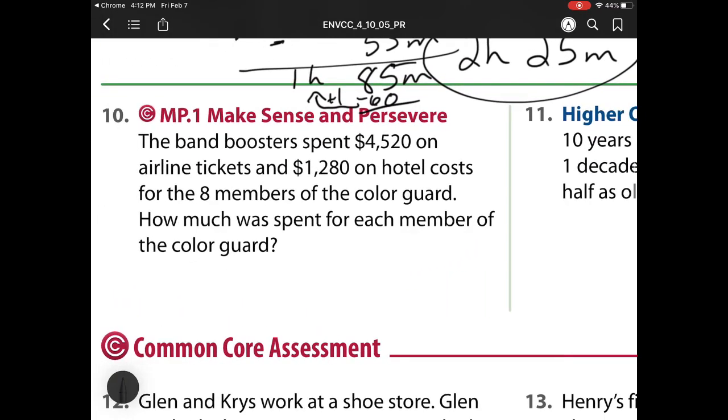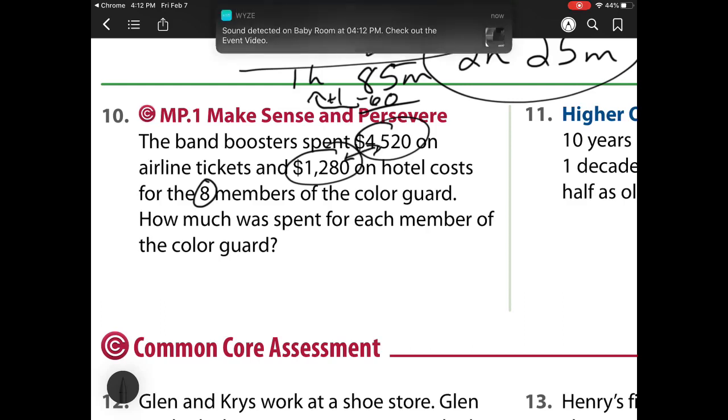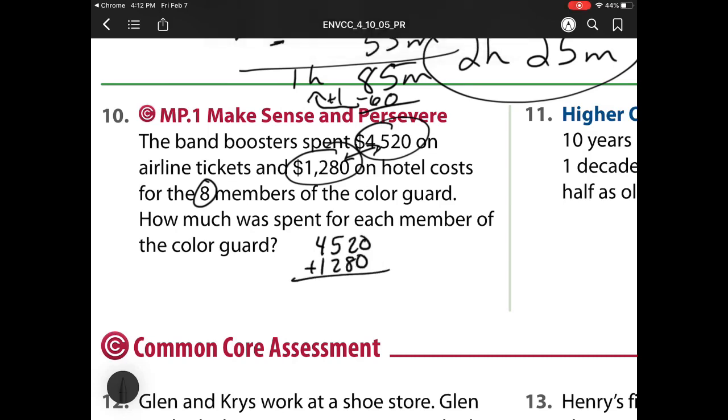For number 10, the band boosters spent $4,520 on airline tickets and $1,280 on hotel costs for 8 members of the color guard. How much was spent for each member? Well, first I have to figure out what the total amount spent was. So I have to add those two together. $4,520 plus $1,280. And I'm left with $5,800.